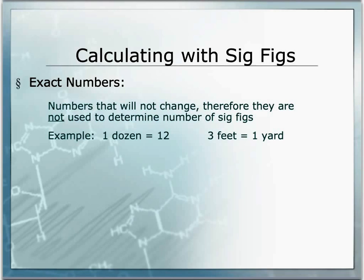The same thing applies with conversions. Three feet equals one yard — one yard will always equal exactly three feet, not more, not less. So exact numbers are not used when we're determining the number of sig figs from a calculation.